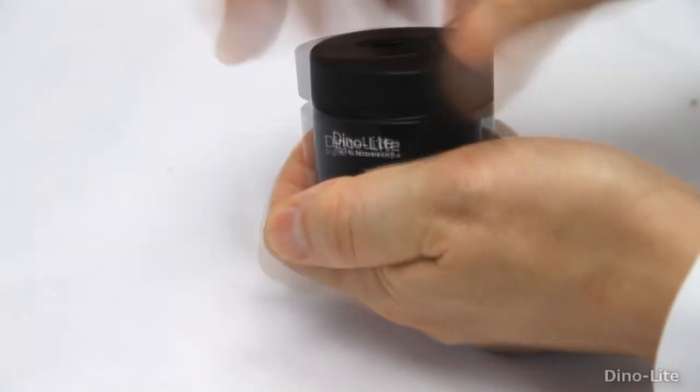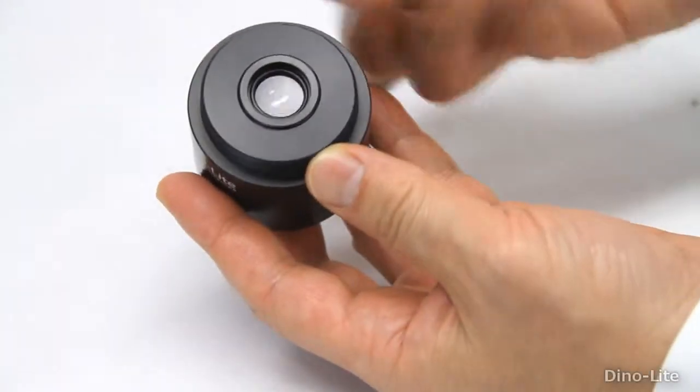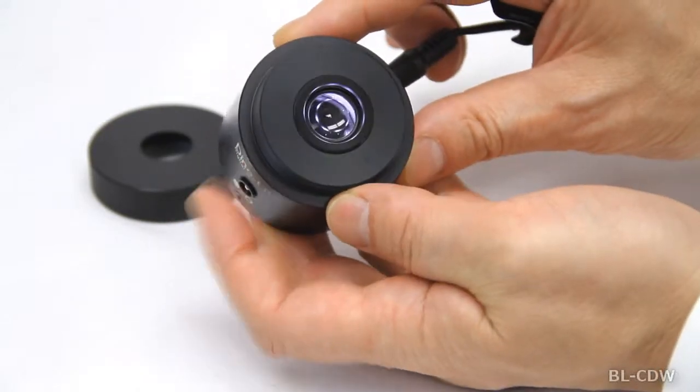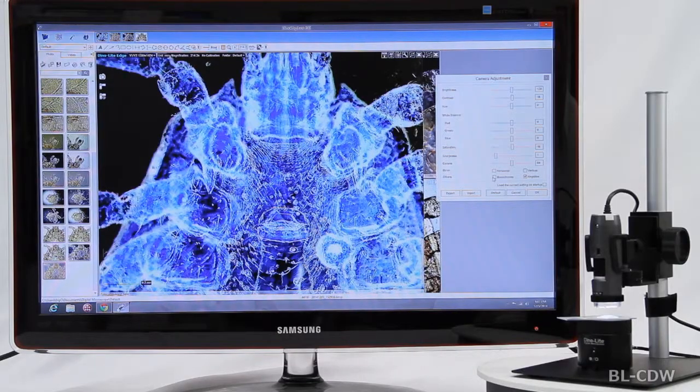The bright field mode of the BLCDW produces a collimated beam of light with no adjustment required, reducing the scatter light which reveals more detail compared to a diffused backlight.